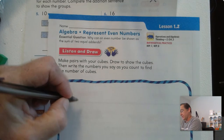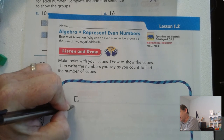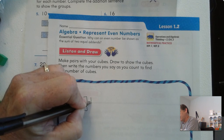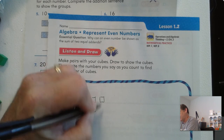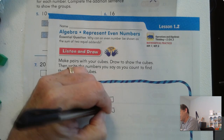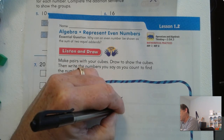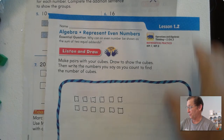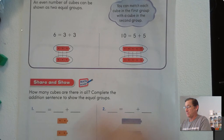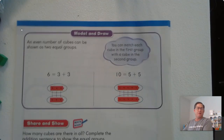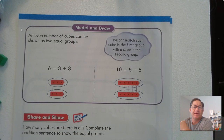So now draw your cubes. I had 6 pairs of 2. Let's look at page 18. Remember that an even number of cubes can be shown as 2 equal groups.